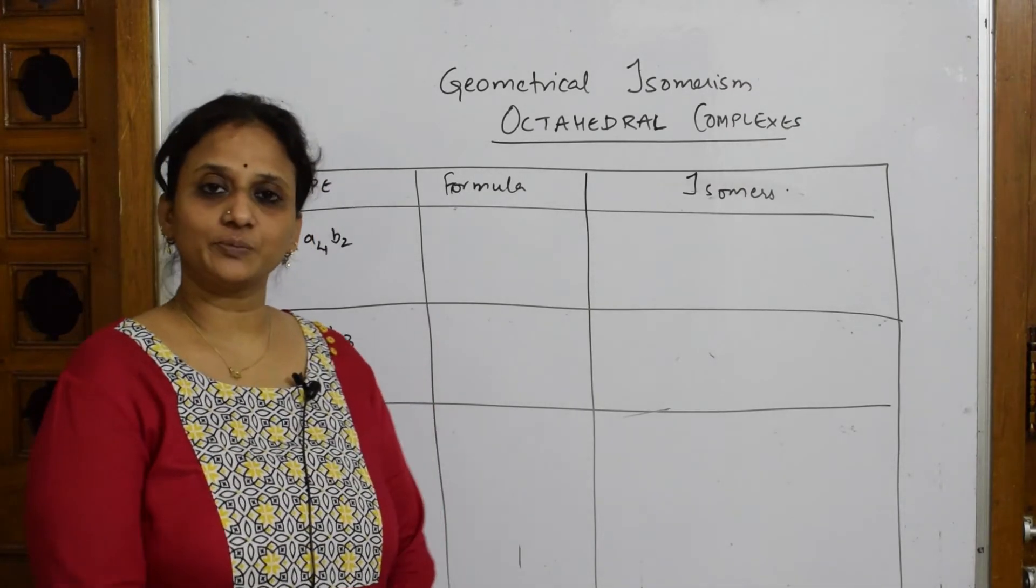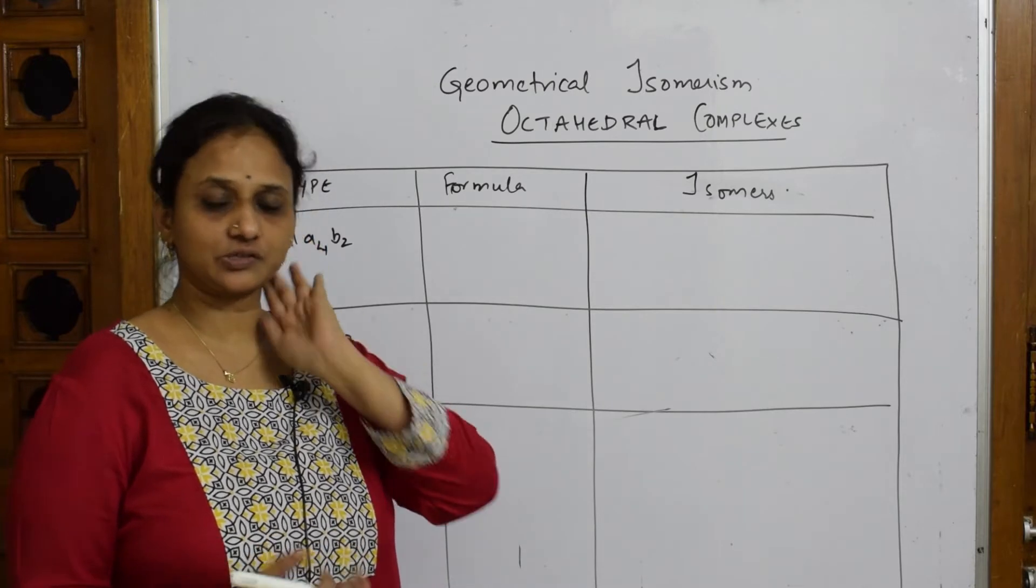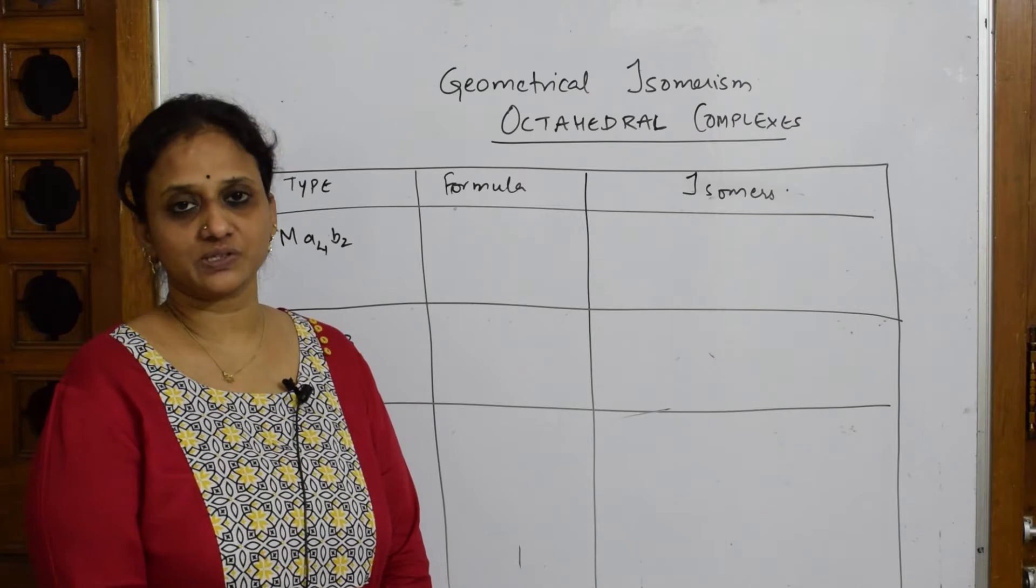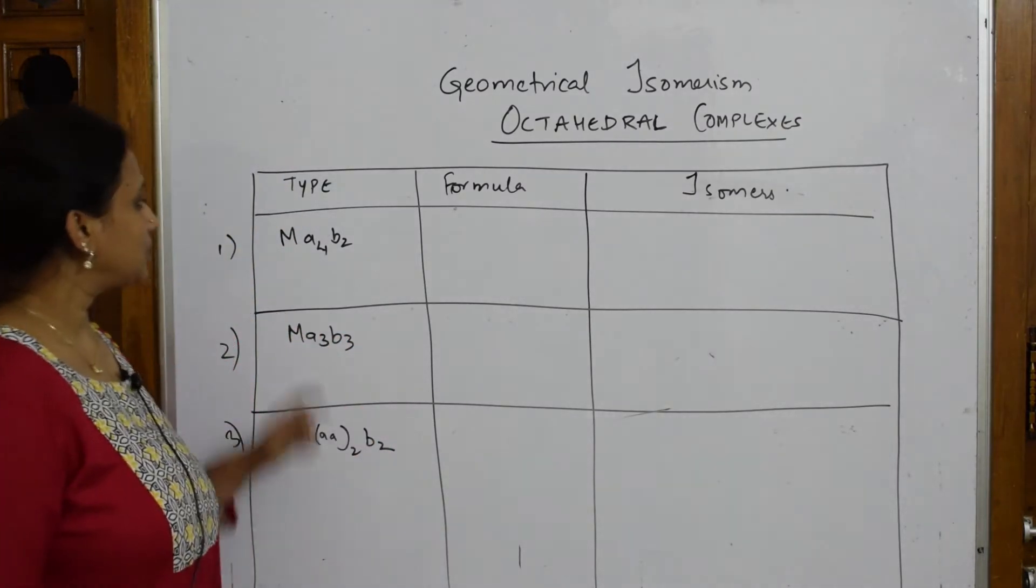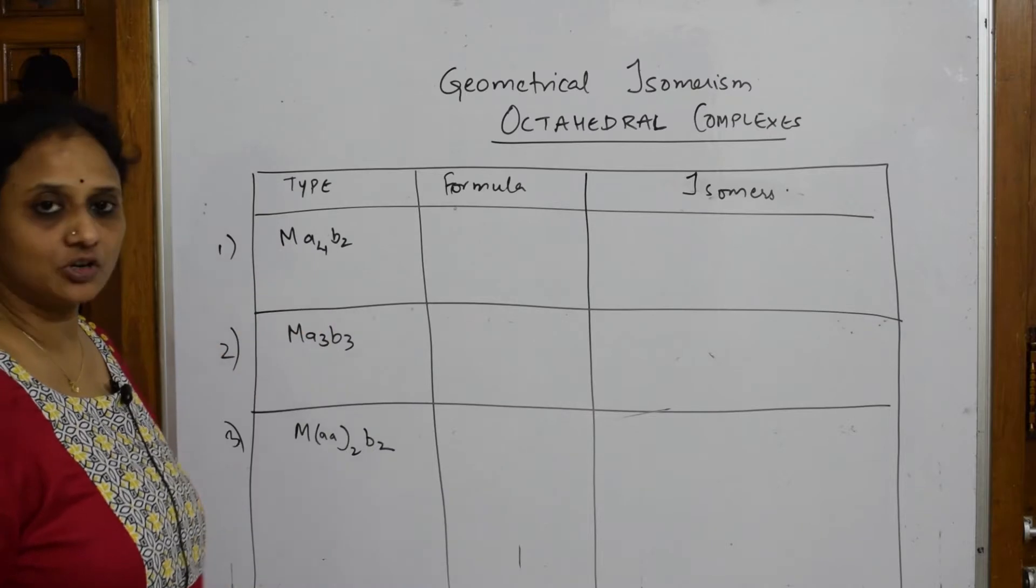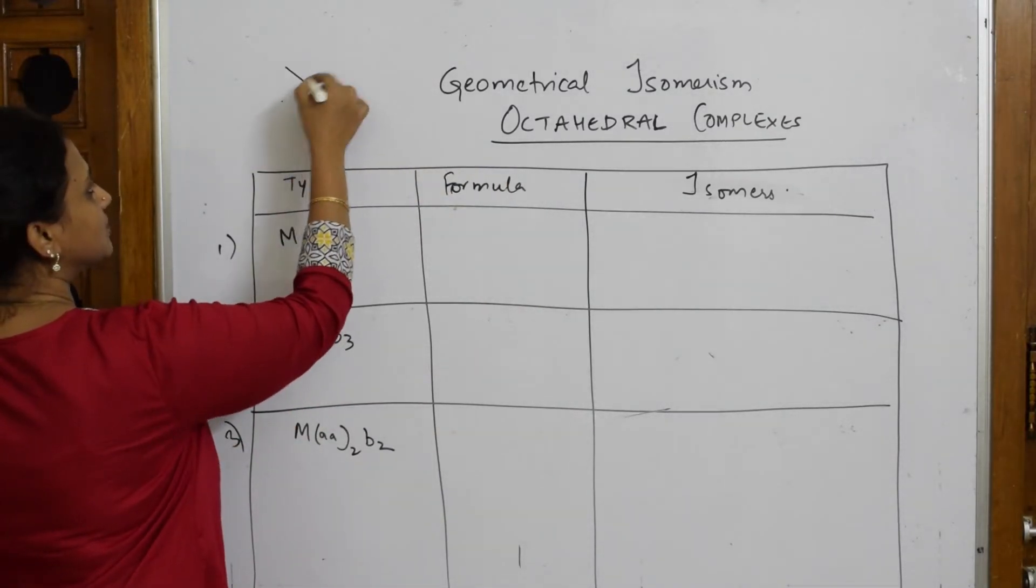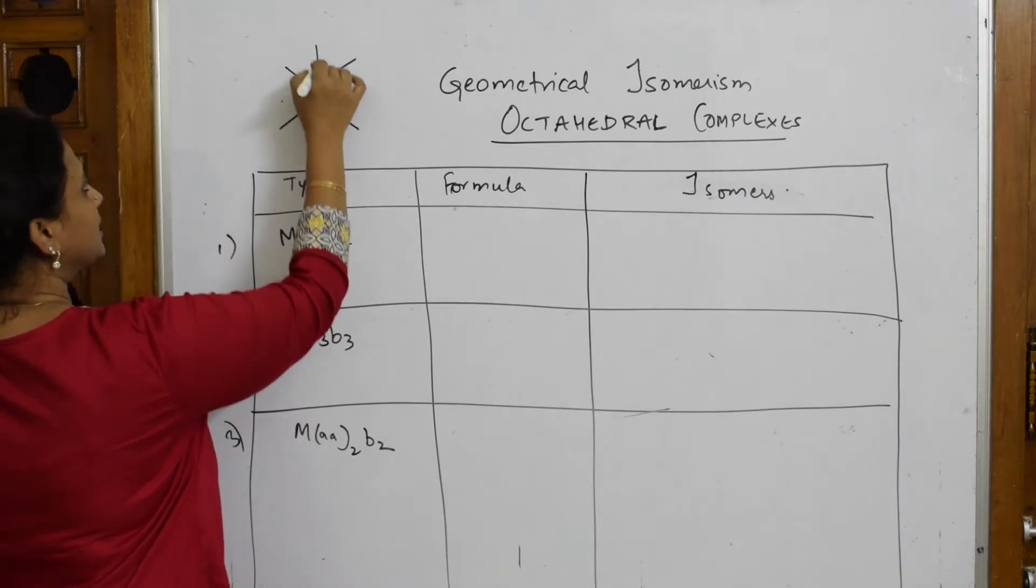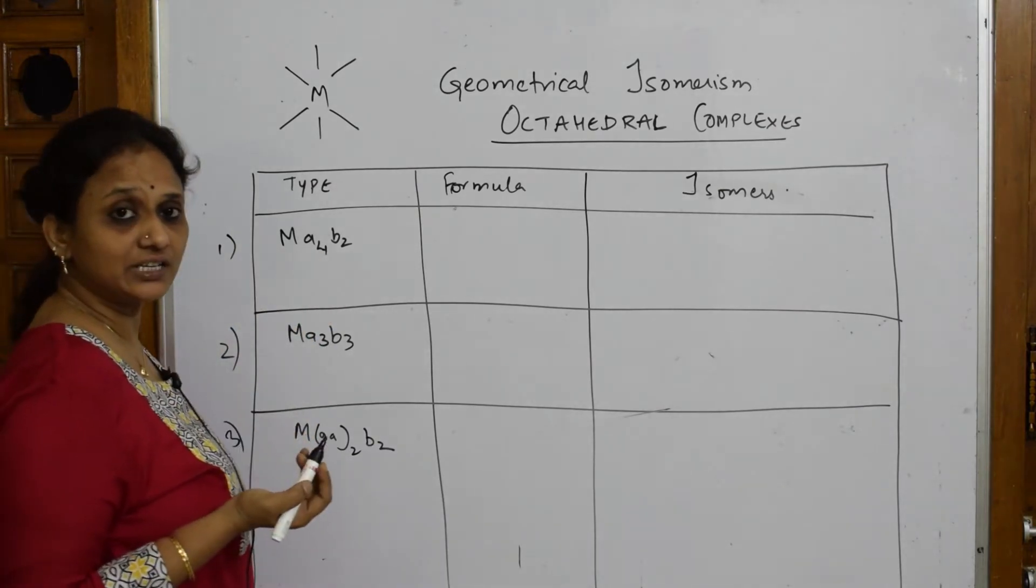So, now after your tetrahedral complexes, let's start with learning the geometry of octahedral complexes. This is also geometrical isomerism. Here also I'll be drawing cis and trans isomers, but the only difference is the type of isomers which you're going to see. Now here when I say octahedral complexes, how should the ligands be arranged? This is your metal atom. Just see 1, 2, 3, 4, 5 and 6. This is how the ligands are going to arrange around the metal atoms.